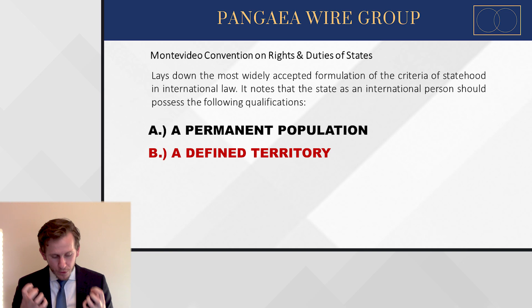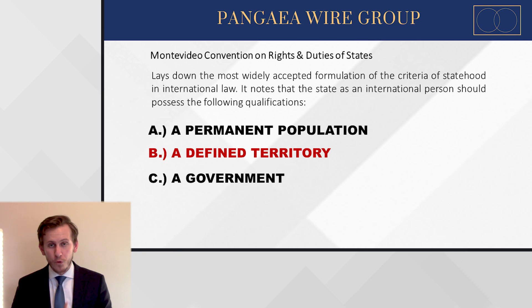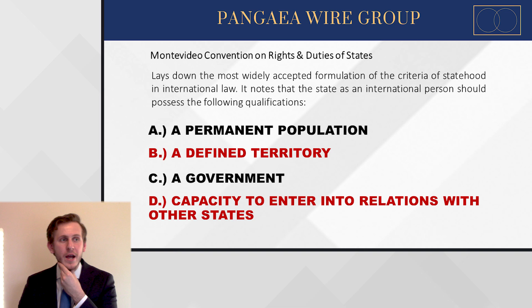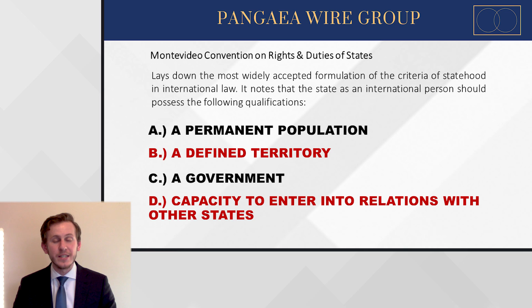Firstly, you need to have a permanent population. You also need to have a defined territory — a place where you can stick your flag and say, this is mine. You also need a government to enact the laws of the state. And you need to have the capacity to enter into relations with other states. These are the four main characteristics of classical sovereignty, which forms the legal basis of how states interact and the development of international infrastructure.